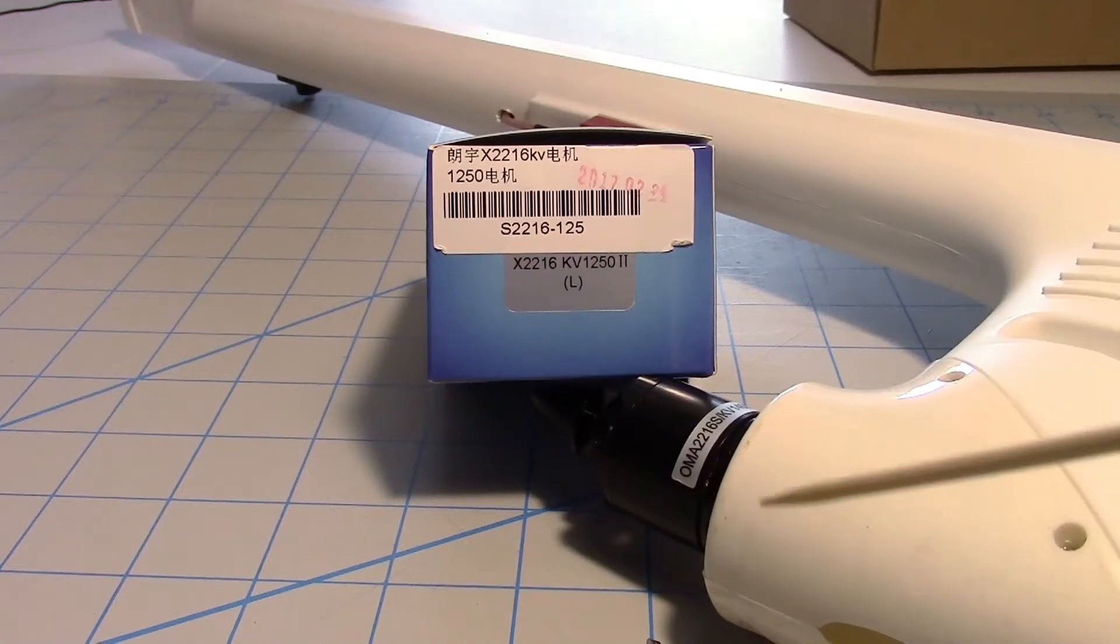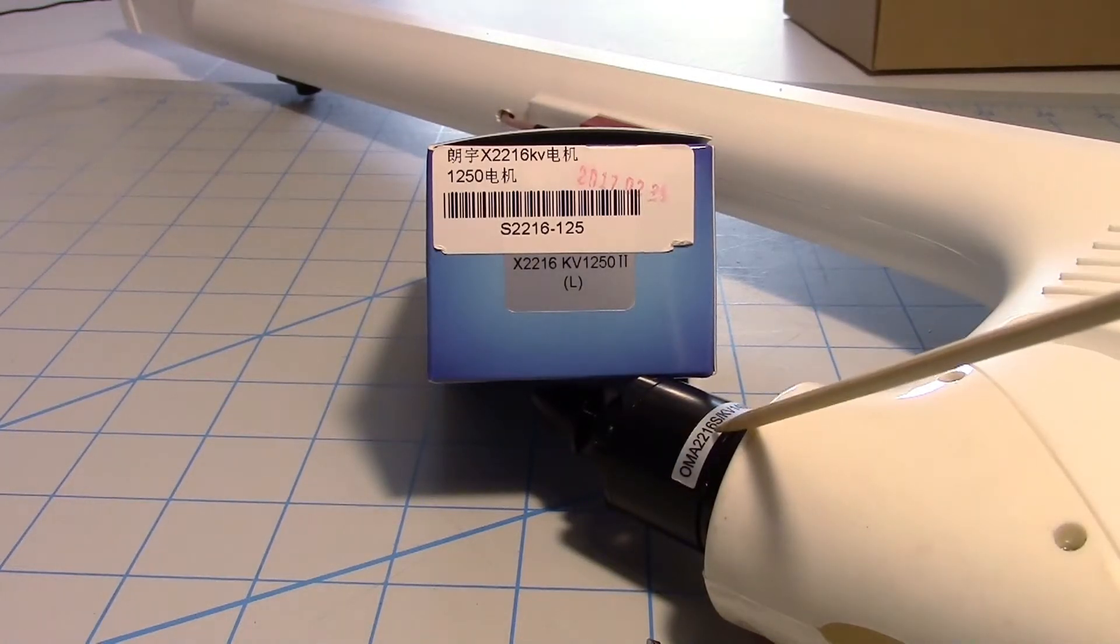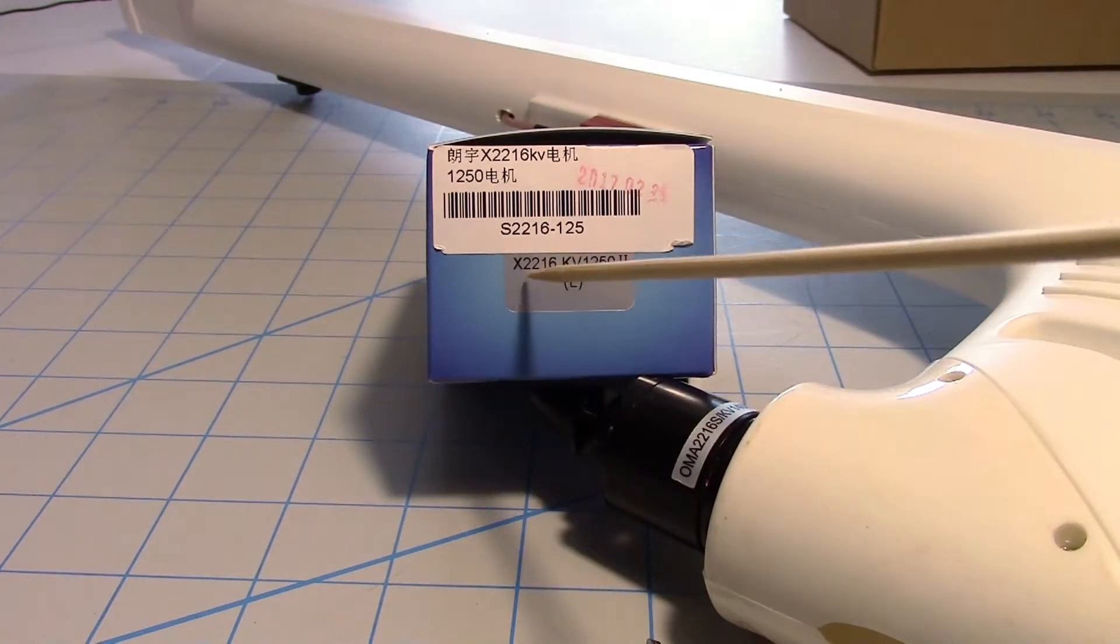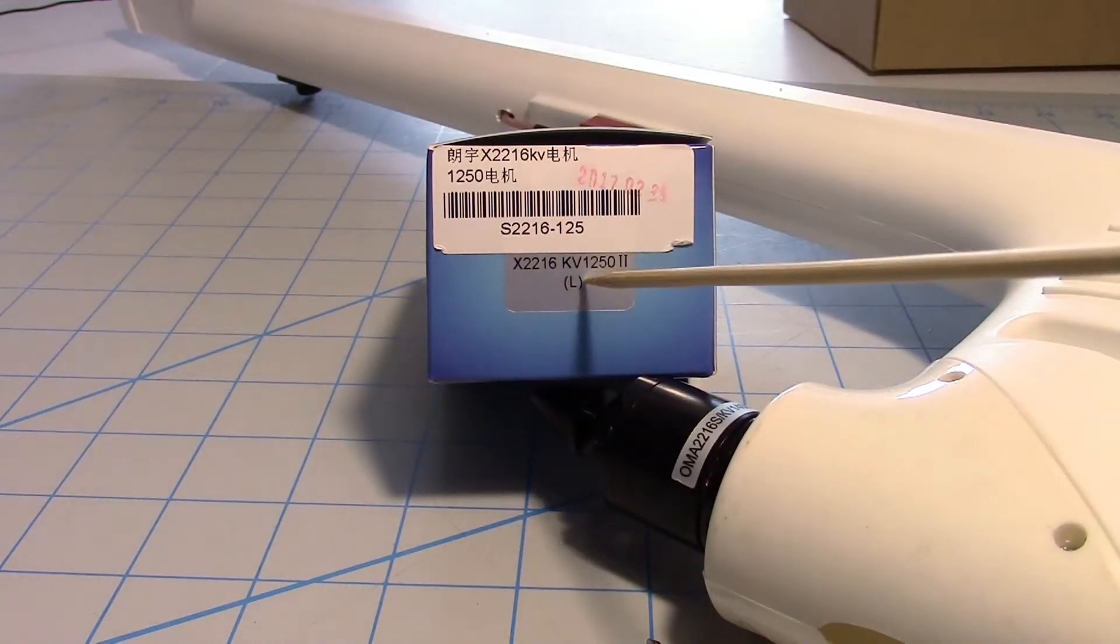Since I'm going to be running a 4-cell battery, I want to replace the stock motor, which is a 1400 kV, with this SunnySky 2216 1250 kV. I'm going to have to take out these screws right here and pull this cover off.